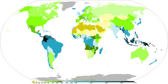Precipitation is a major component of the water cycle, and is responsible for depositing the fresh water on the planet. Approximately 505,000 km³ of water falls as precipitation each year — 398,000 km³ over the oceans and 107,000 km³ over land. The globally averaged annual precipitation is 990 mm, but over land it is only 715 mm. Climate classification systems such as the Köppen climate classification use average annual rainfall to help differentiate between differing climate regimes.